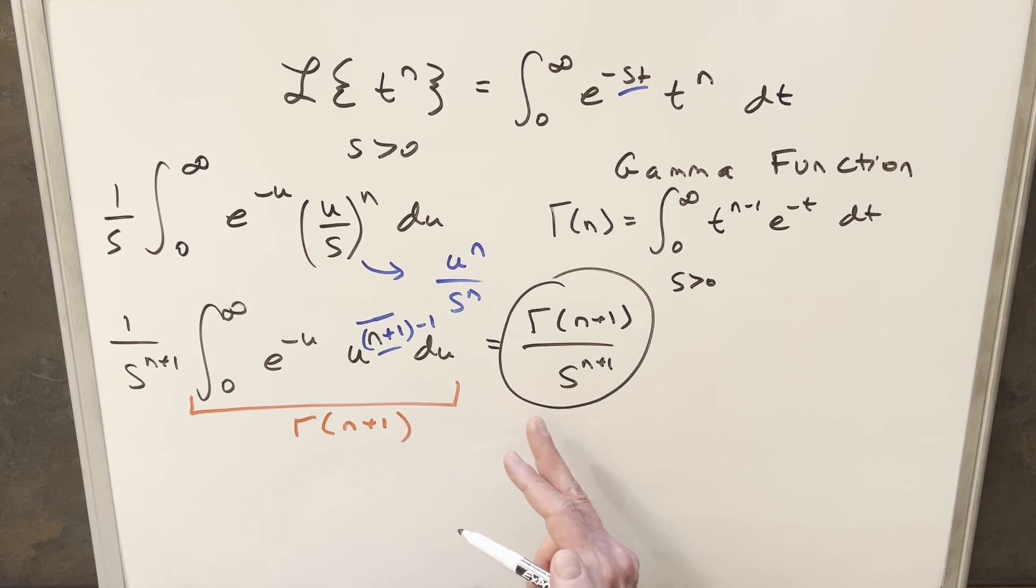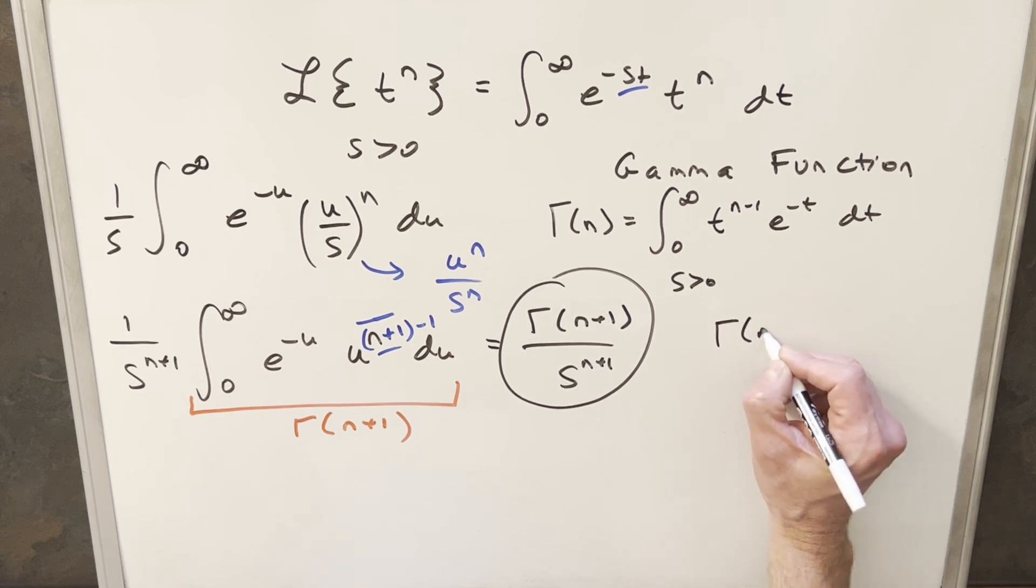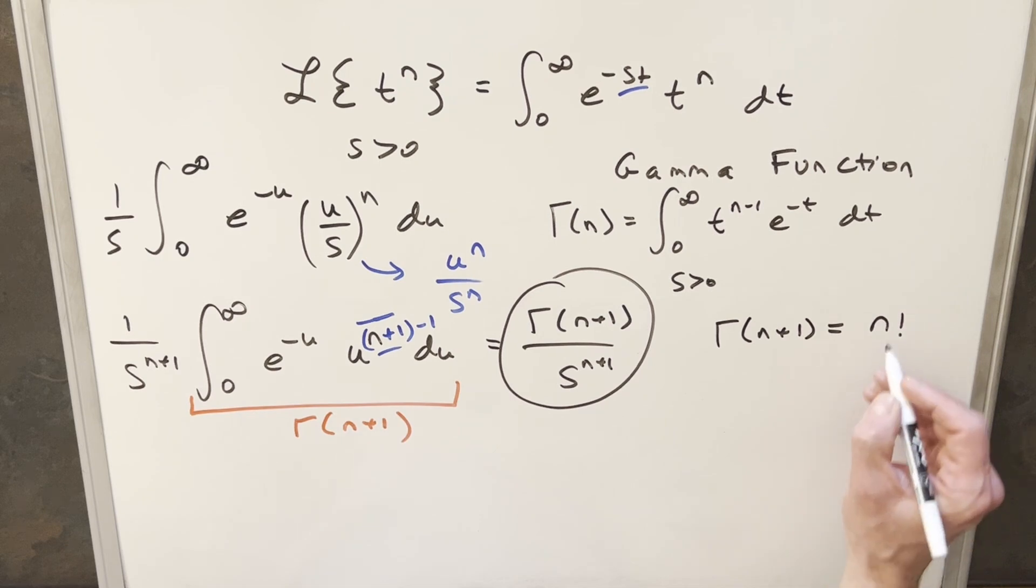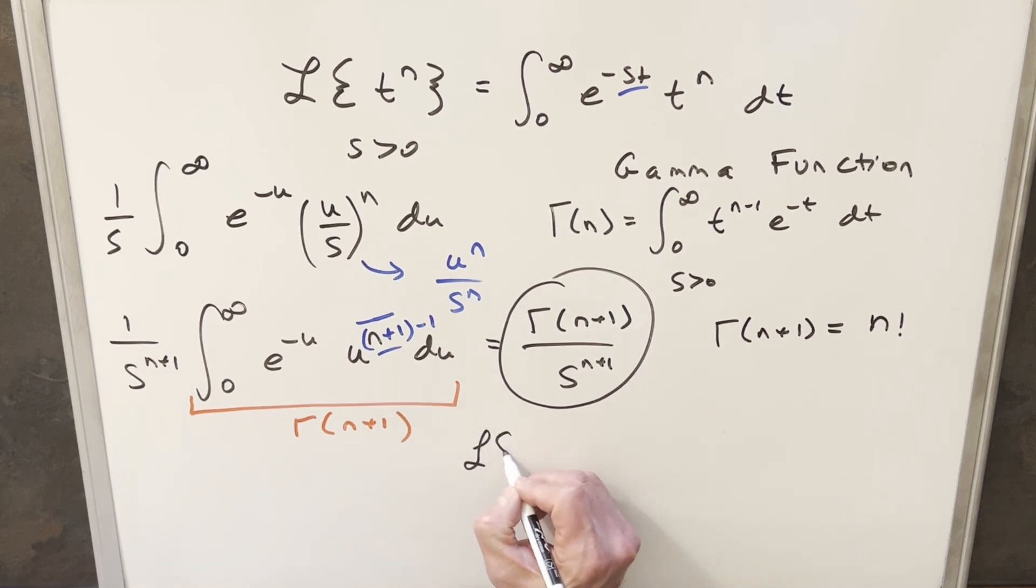Now one thing we're going to do, the first thing I want to do is let's look at an integer case. And what we can do for that is use this formula for the gamma function. We can say that gamma of n plus 1 is the same thing as n factorial. And so for this, typically for the factorial, we want to see integers. So let's look at an example like what is the Laplace transform of t to the fourth.